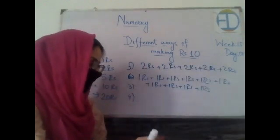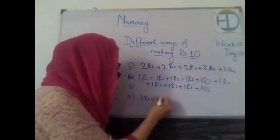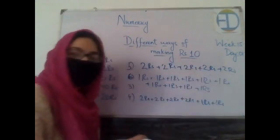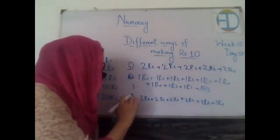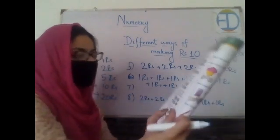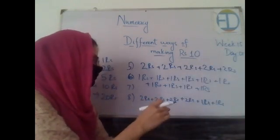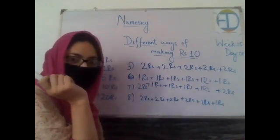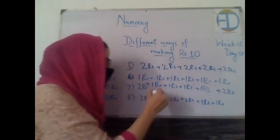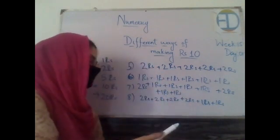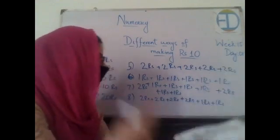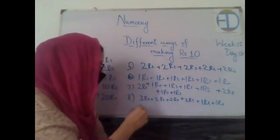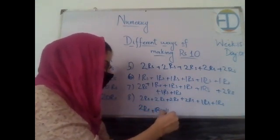The seventh combination: four two-rupee coins and two one-rupee coins — eight plus two equals ten. The eighth: three two-rupee coins and four one-rupee coins — six plus four equals ten. The ninth: two two-rupee coins and six one-rupee coins — four plus six equals ten. The last: one two-rupee coin and eight one-rupee coins — two plus eight equals ten.